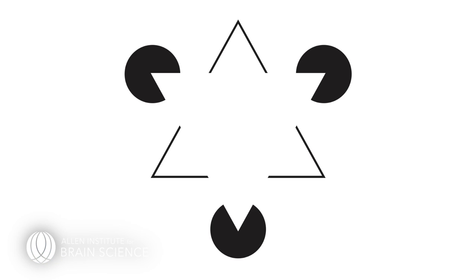In the famous Kanizsa triangle, you see the three identifying points of a triangle and your brain fills in the edges, even though there are none present. The percept you have of an edge completing the triangle is an illusion.